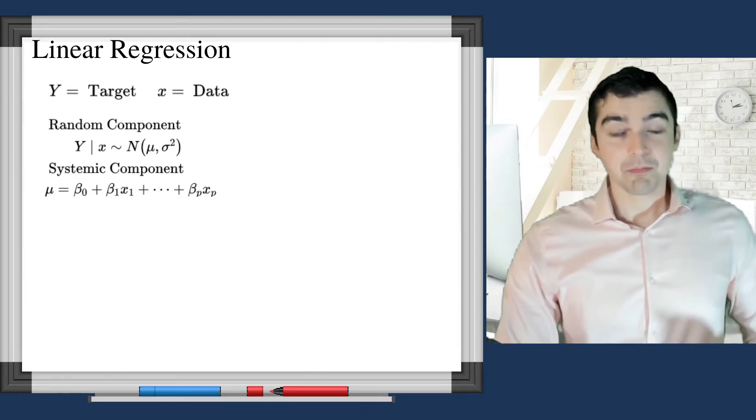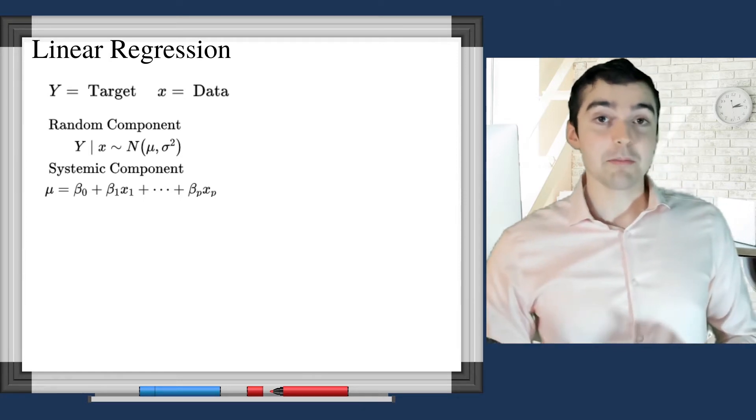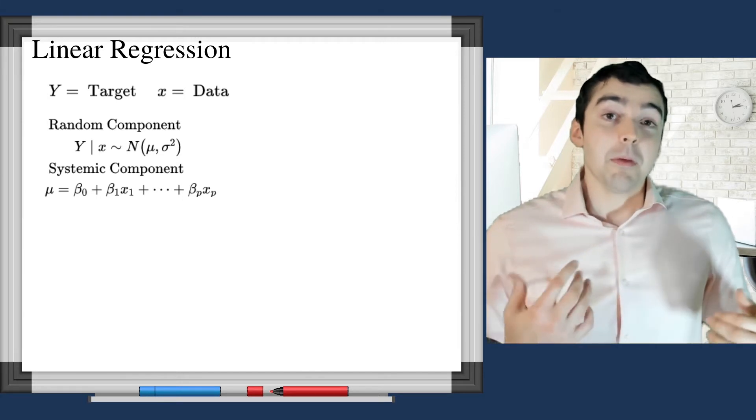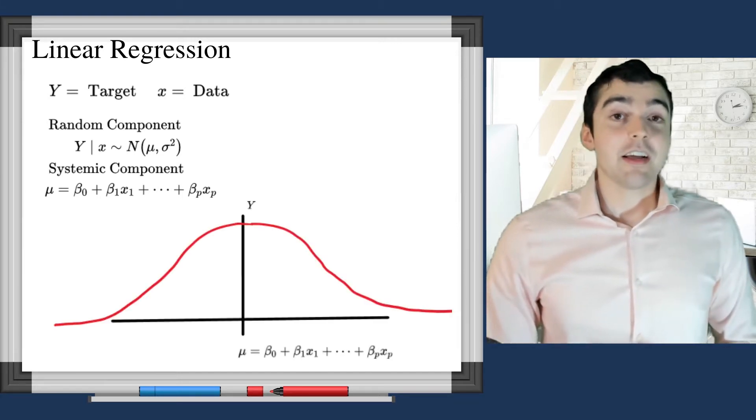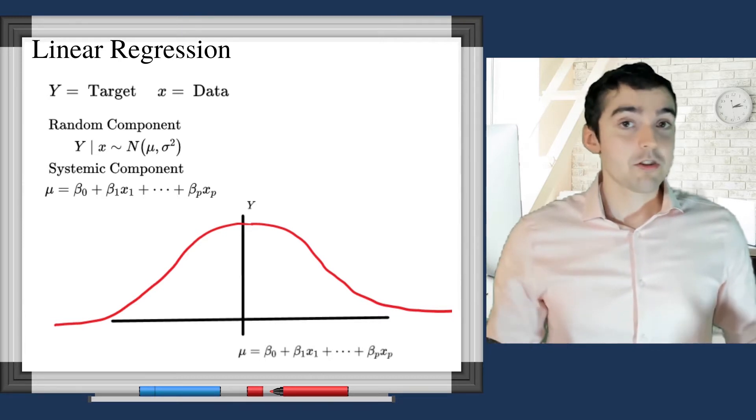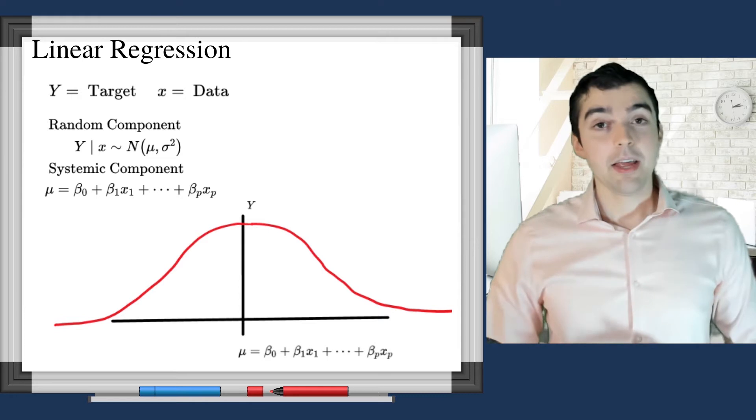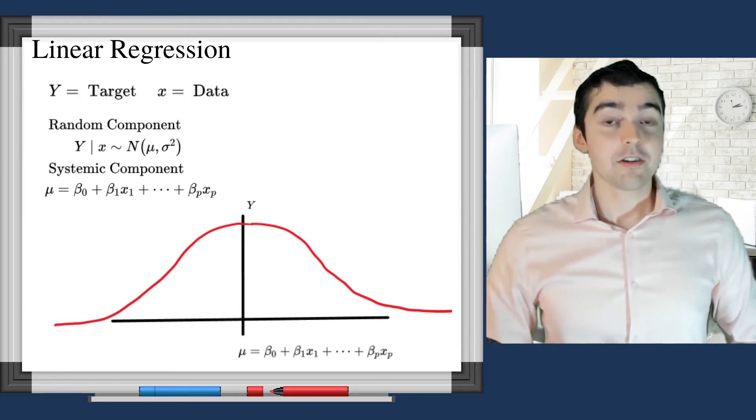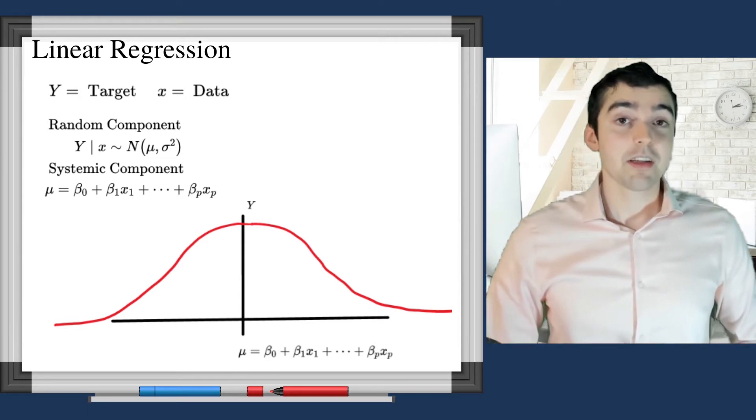of the distribution. The second key assumption is that the distribution is Gaussian. This means that it has a symmetric shape and it is centered around a single number.